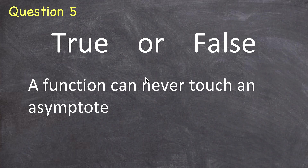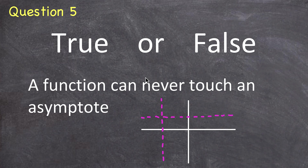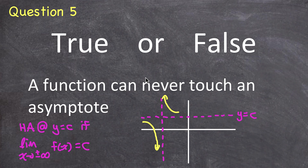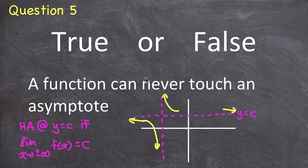Question 5. True or false? A function can never touch an asymptote. Let me sketch a function with both a vertical and horizontal asymptote. A function goes to negative or positive infinity approaching a vertical asymptote. For a horizontal asymptote at y = c, the definition says the limit as x approaches plus or minus infinity of f(x) equals c. So we only care about the extremes — at any one point, the function could cross the horizontal asymptote, and in this example it crosses it twice. So the answer is false.